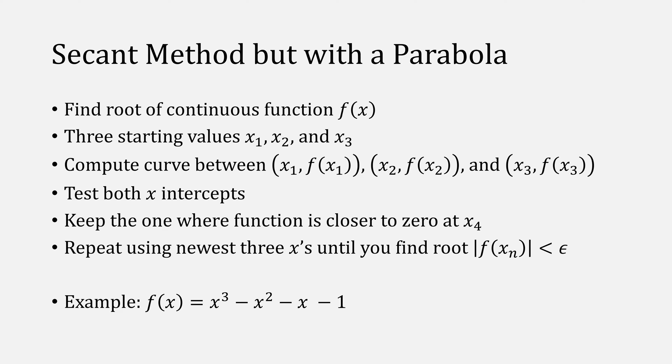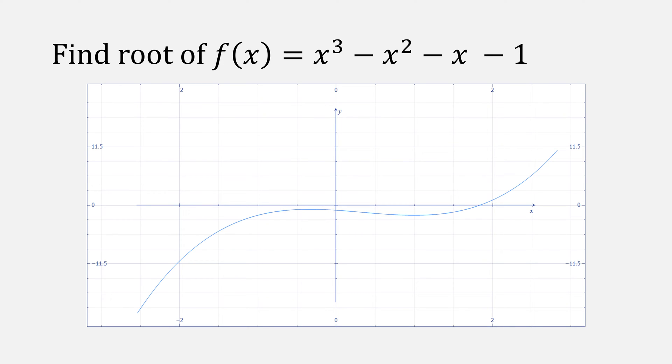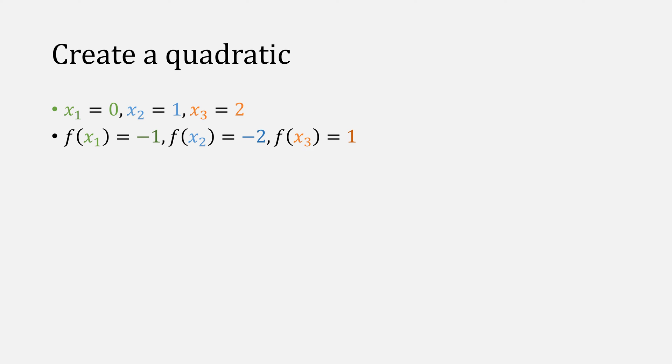Let's try to find the root of x cubed minus x squared minus x minus 1, which is this function here. And we need three starting points, x1, x2, and x3. They are the points 0, 1, and 2. To find the parabola that goes through these three points, we can use the Lagrange polynomial.